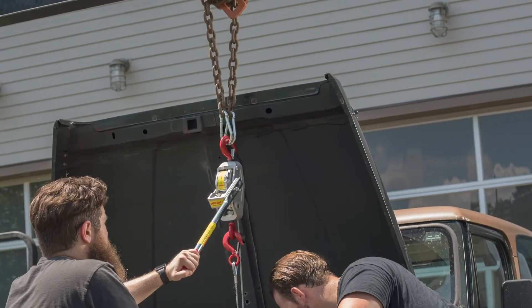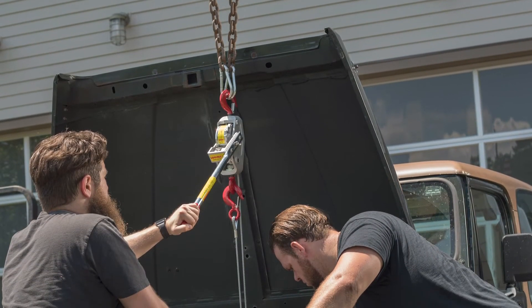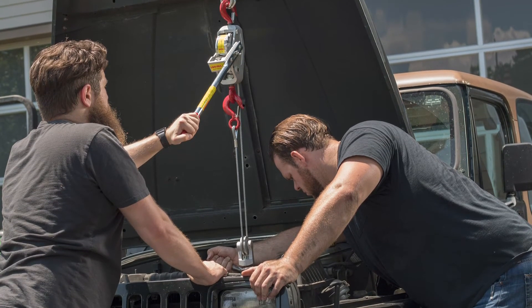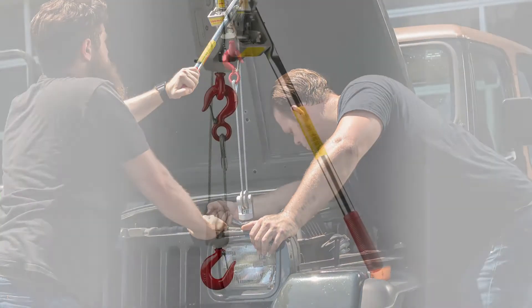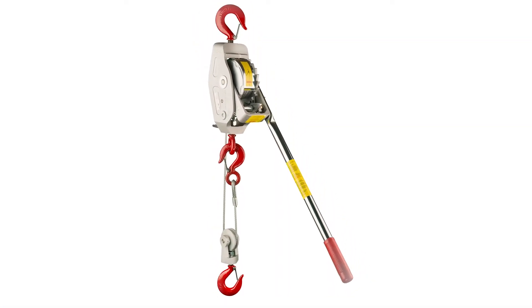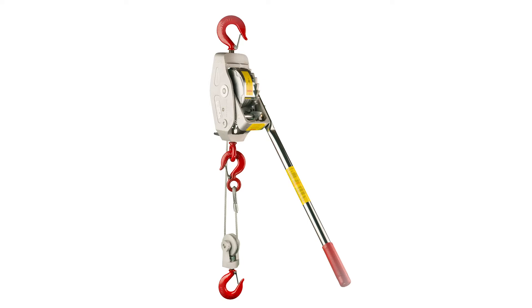This design is great for precision operation, where it is important to lower a load slowly and carefully. Rapid lowering capability is available on hoists such as the 330R for jobs when lowering a load quickly might be more desirable than slow, precise operation.